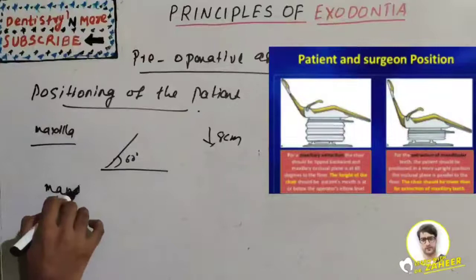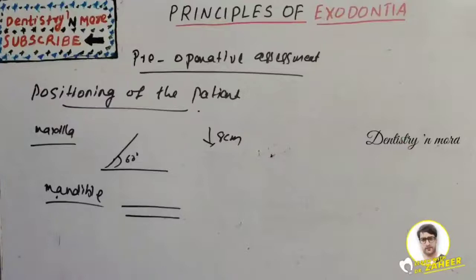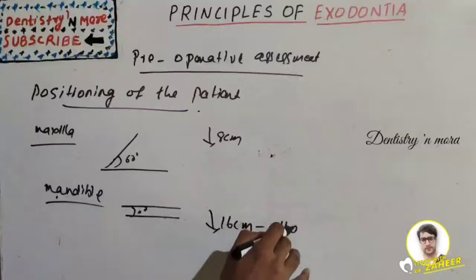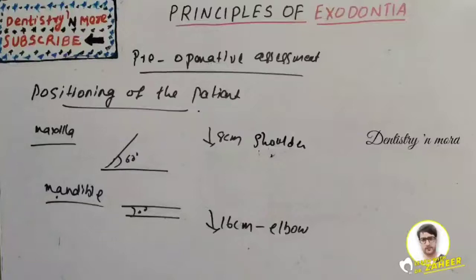For mandibular teeth extraction, the patient should be positioned so that the occlusal plane is parallel to the floor. The chair should be 16 centimeters below the level of the operator's elbow — compared to eight centimeters below the operator's shoulder for maxillary extraction. This is how we position the patient for both maxillary and mandibular teeth extraction.